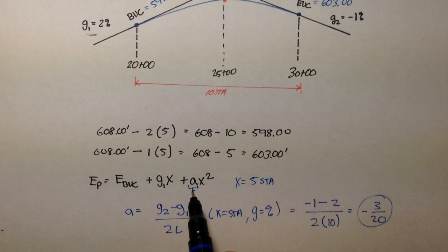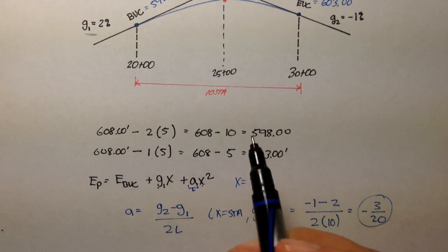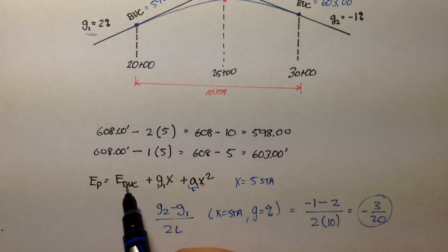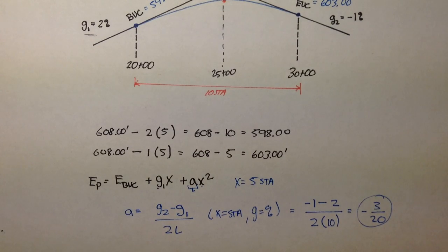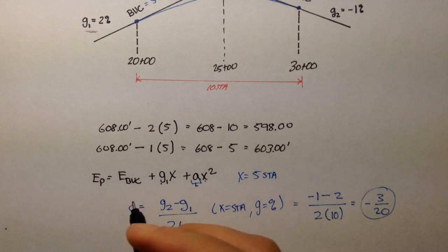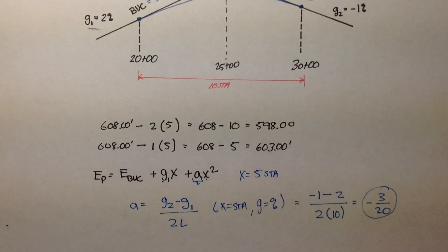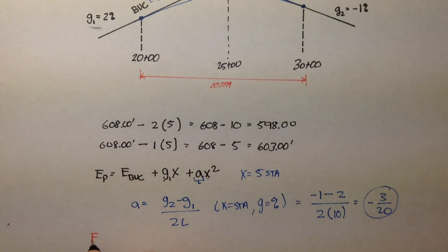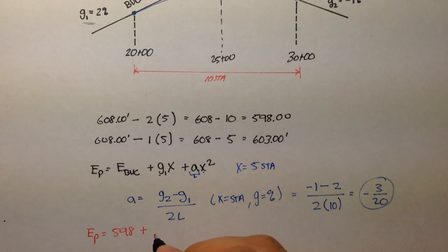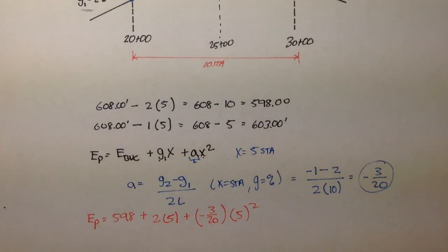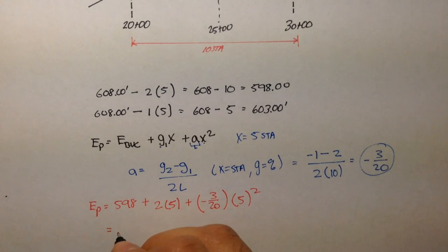So, A is simply grade 2 minus grade 1, and grade 2 is negative 1 minus grade 1 is 2% over 2 times L. The length here is 10 stations. So, we're left with negative 3 over 20. That's our A term. So, we simply plug that A term into our equation. We have X, we have G, and we have the elevation of beginning of vertical curvature.